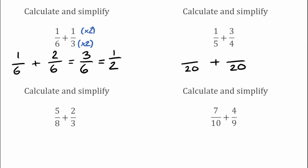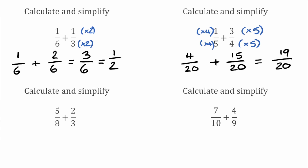To make this 5 into a 20 we'd have had to multiply the bottom by 4, which means we're also going to do the same to the top. So 1 multiplied by 4 gives 4, making that 4 over 20. For the fraction on the right, we had 4 — we'd have had to multiply that by 5 to make 20, so we do the same to the top: 3 multiplied by 5 gives 15. So 4 over 20 add 15 over 20 gives us 19 over 20.